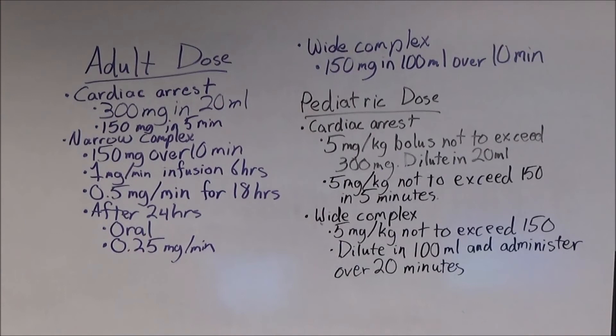Amiodarone is not indicated for pediatric patients in stable refractory narrow complex tachycardia. For pediatric patients in stable wide complex tachycardia, administer 5 mg per kg, not to exceed 150 mg, diluted in 100 mLs of normal saline.